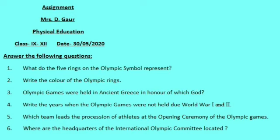Question 1: What do the 5 rings on the Olympic symbol represent? Next, write the color of the Olympic rings. Next, Olympic Games were held in ancient Greece in honor of which God? Write the years when the Olympic Games were not held due to World War 1 and 2. Next, which team leads the procession of athletes at the opening ceremony of the Olympic Games?